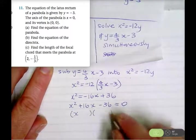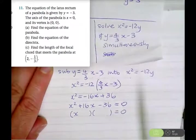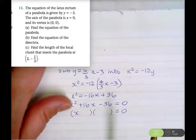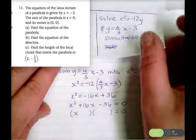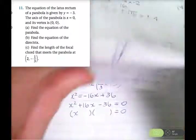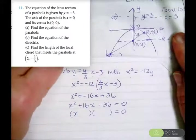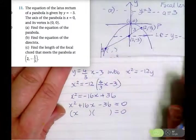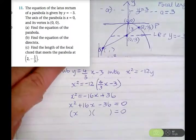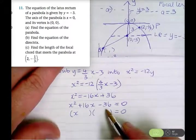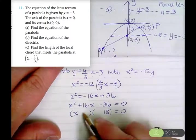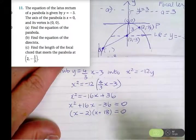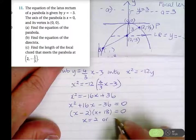Factorising x squared plus 16x minus 36: we know one solution is x equals 2. Using factors 18 and negative 2: x squared plus 18x minus 2x minus 36 works. So therefore x equals 2 or x equals negative 18. My estimate of negative 5 or 6 was off — the chord actually extends much further.